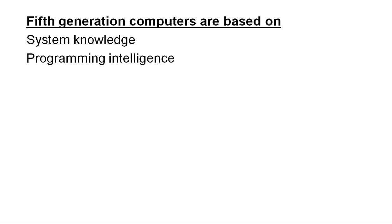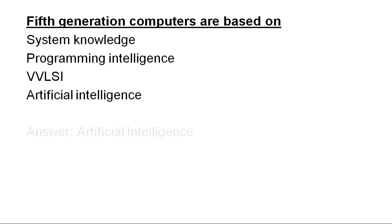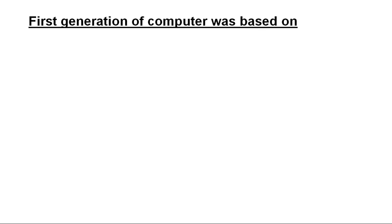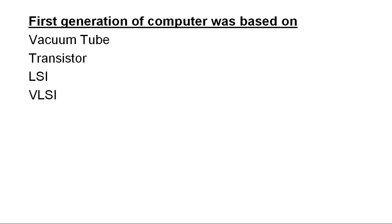What are 5th generation computers based on? Options: knowledge-based systems, programming intelligence, VLSI, or artificial intelligence. The answer is artificial intelligence. What was the 1st generation of computers based on? Options: vacuum tubes, transistors, LSI, or VLSI. The first generation of computers was based on vacuum tubes.